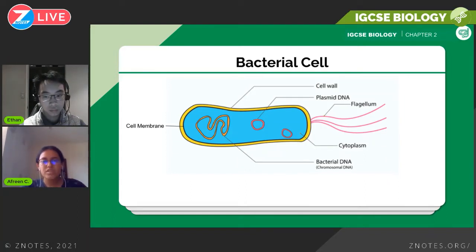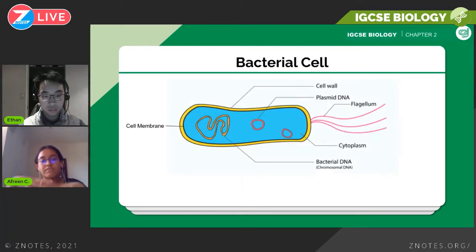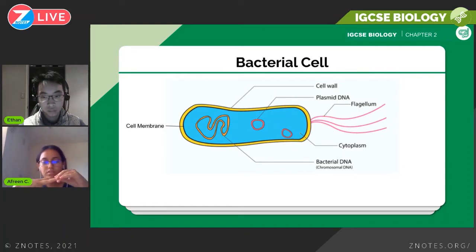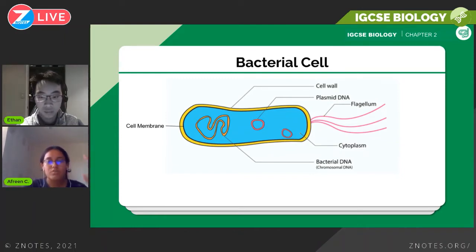Then there's the bacterial cell. You don't need to know much about this — you'll look at plasmid DNA in the biotechnology chapter. For now, you need to know that bacteria have cell membranes and a cell wall, and they do not have a nucleus. They have free-floating DNA and rings called plasmid DNA, which is used in biotechnology. Bacteria also have a flagellum which helps in movement, though not all bacteria have this.